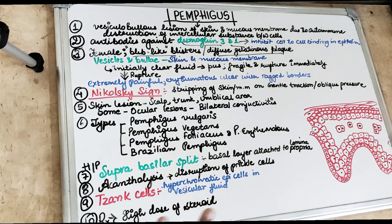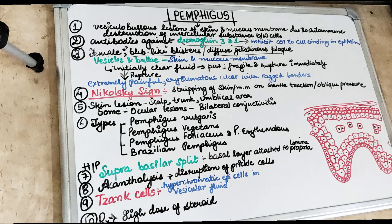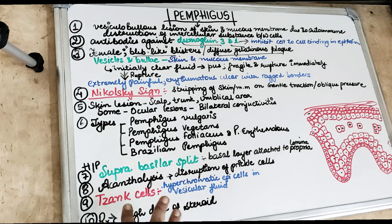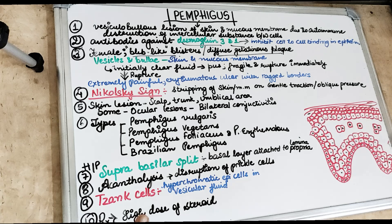Lesions are usually present on the skin over the scalp, trunk, or umbilical areas. In severe cases, the lesions can involve the entire body, and the patient can even die from fluid loss or secondary infection. The patient may die of dehydration or septicemia. Skin lesions of pemphigus usually heal by scar formation.